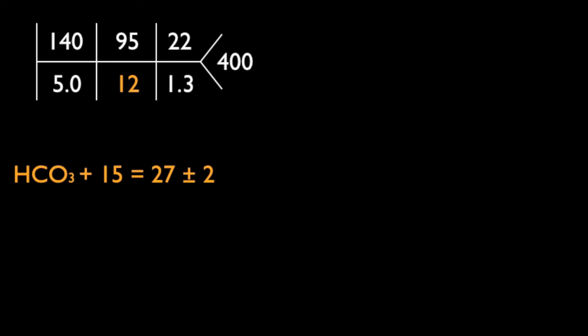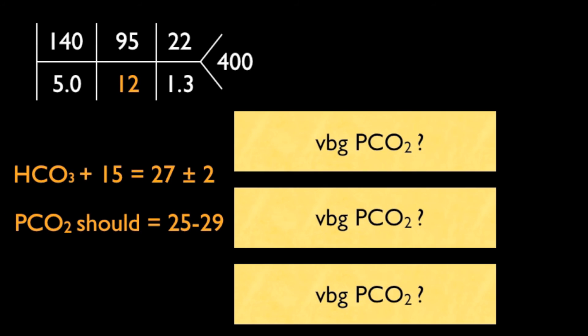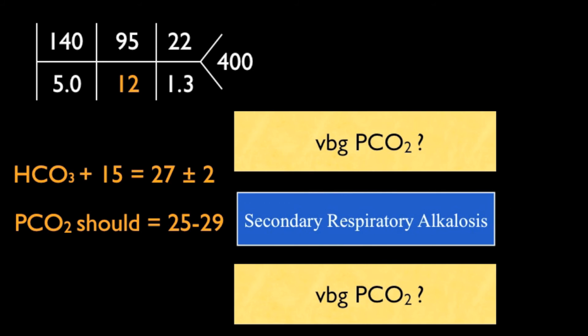Now let's take another patient. Bicarb plus 15 in this case is 27 plus or minus 2, so the PCO2 should be between 25 and 29. Let's take three venous blood gases, one where the PCO2 is 28. That follows the rule, so it's just a secondary respiratory alkalosis.